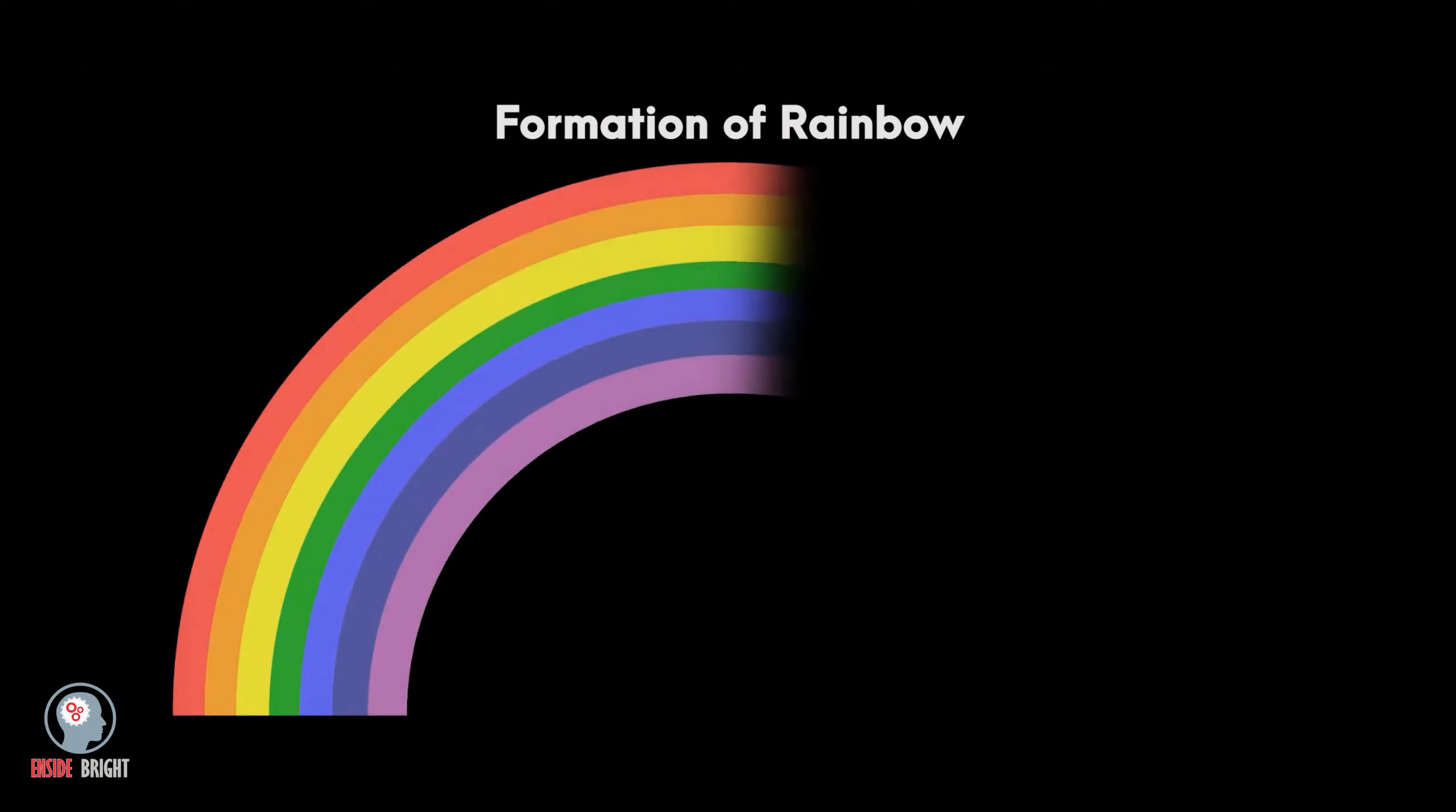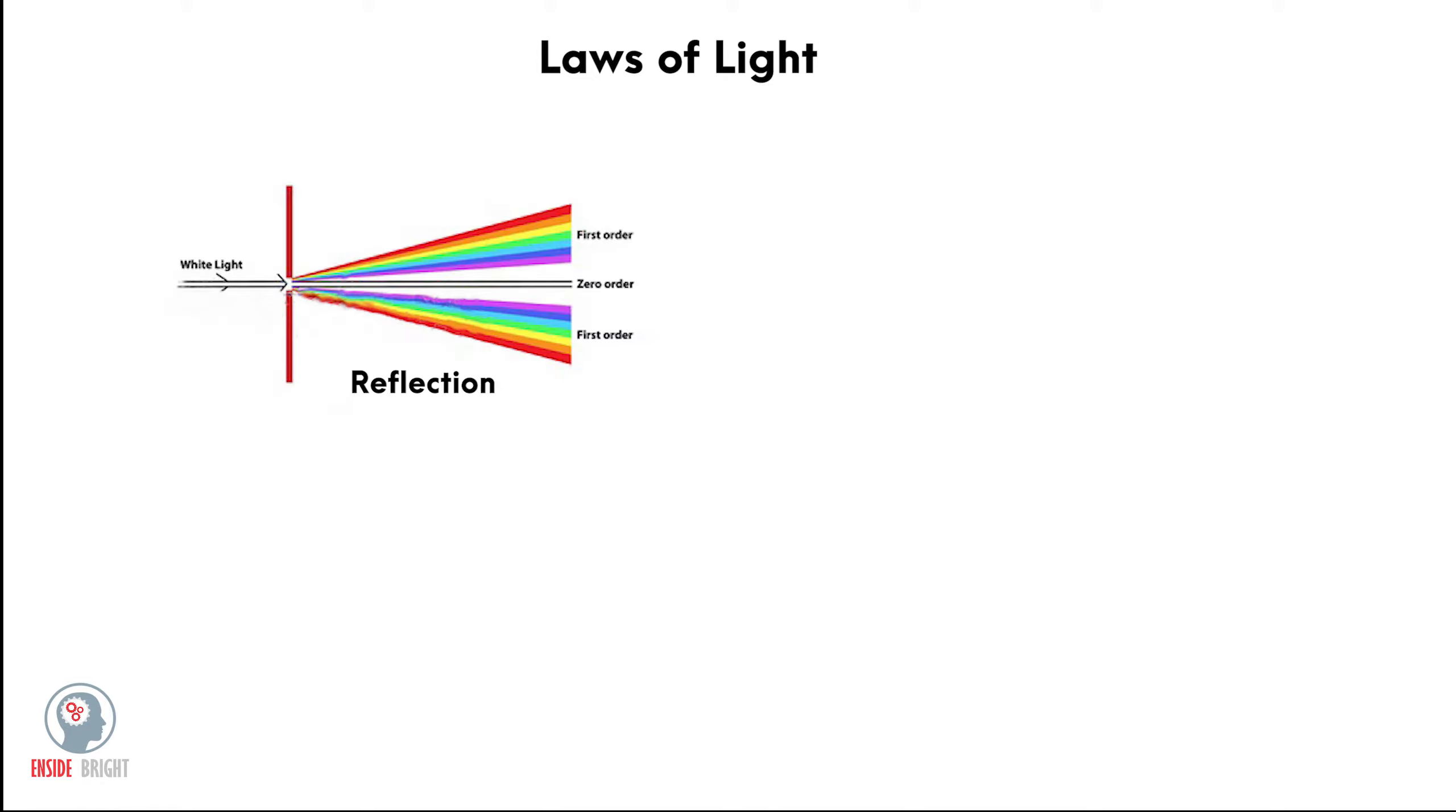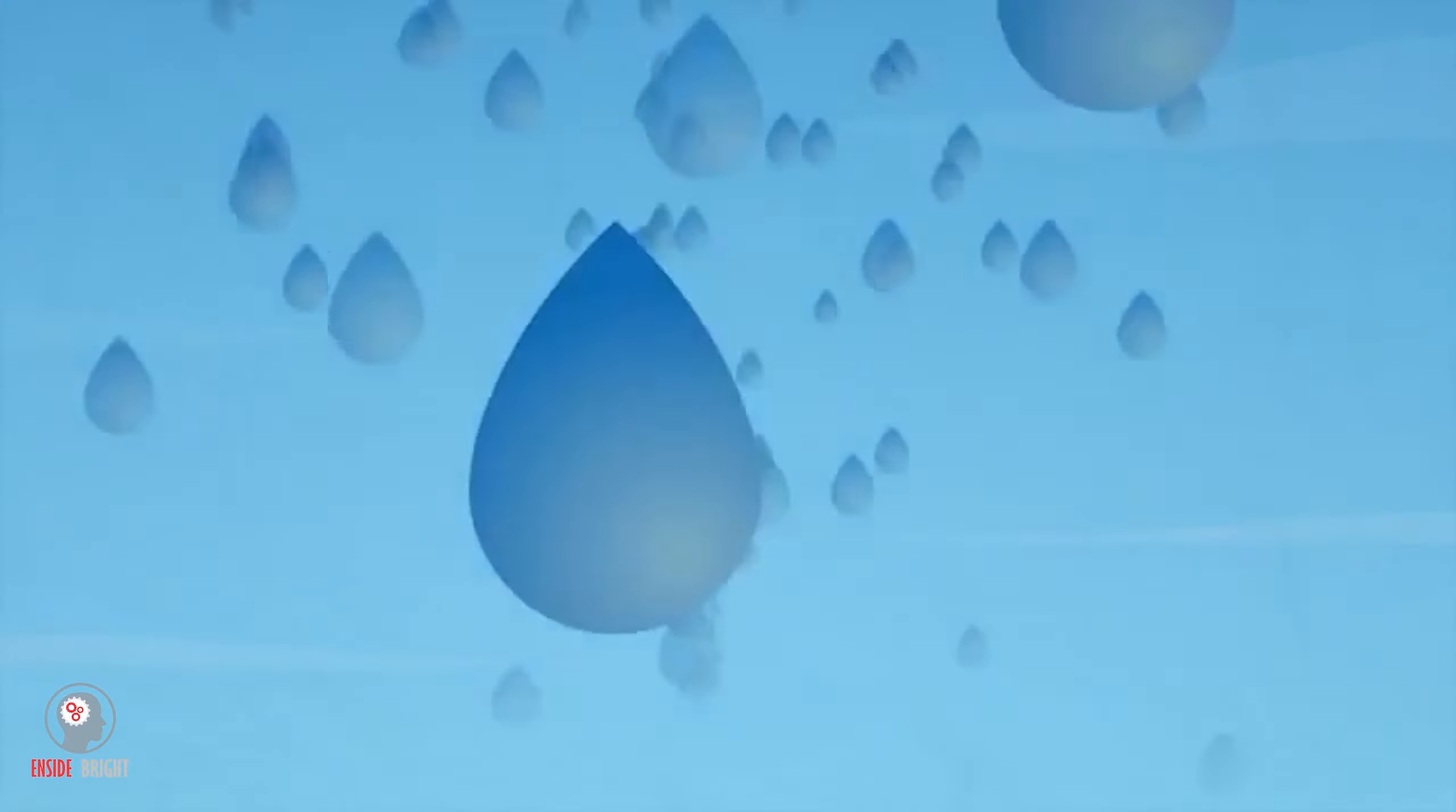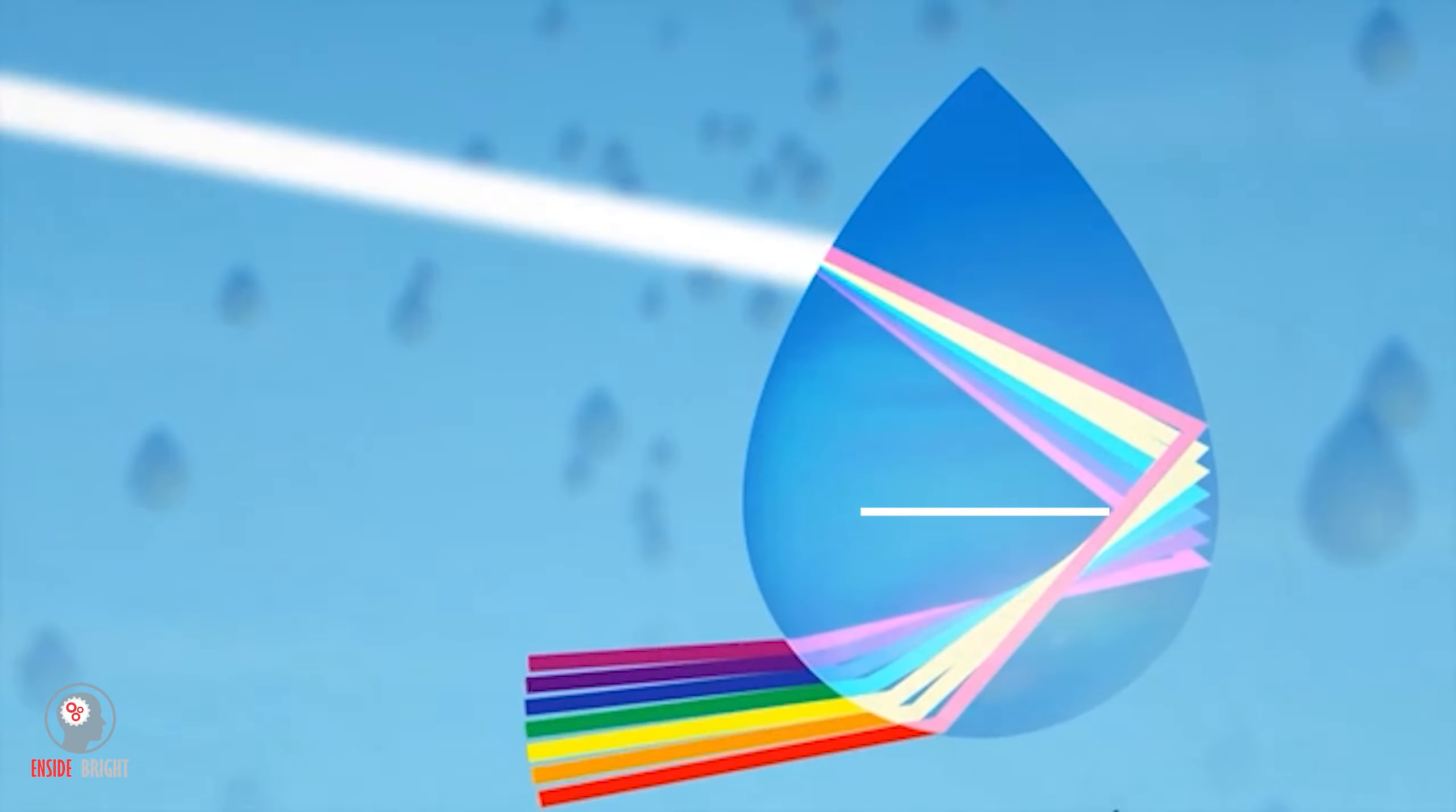Formation of a rainbow is a meteorological phenomenon that occurs due to laws of light: reflection, dispersion, and refraction. In the rainy season, water droplets act as a prism. When sunlight falls on these droplets, they scatter the light at different angles through a process called total internal reflection.